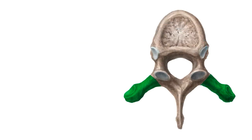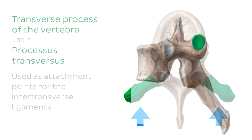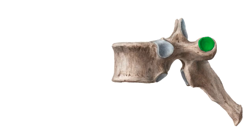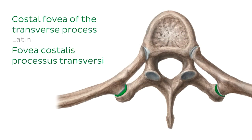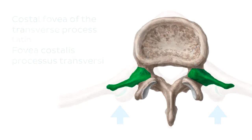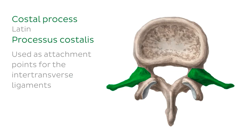Let's move on to the transverse process. It is a bilateral structure located on both sides of the vertebra, used as attachment points for the intertransverse ligaments. Importantly, the transverse processes of the first 10 thoracic vertebrae — T1 to T10 — possess costal facets, which articulate with the tubercles of ribs one to ten. The lumbar vertebrae also possess transverse processes, but instead they're called costal processes. Unlike the thoracic vertebrae, these processes do not have any articular surfaces.